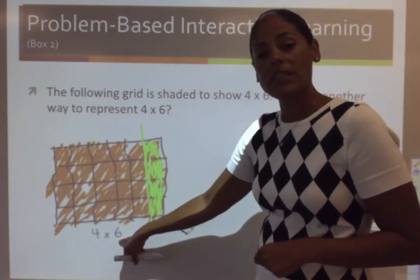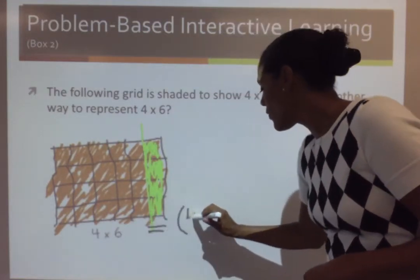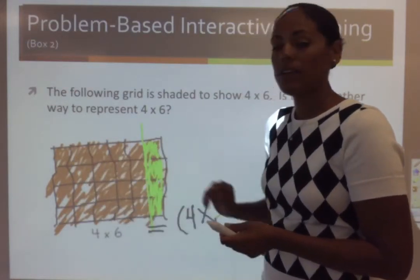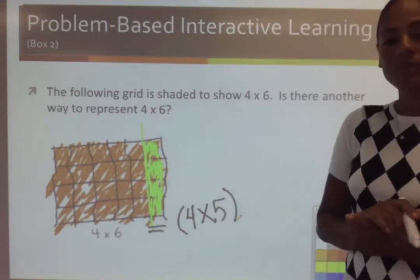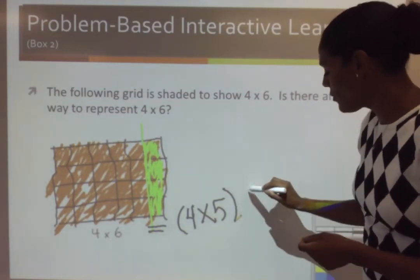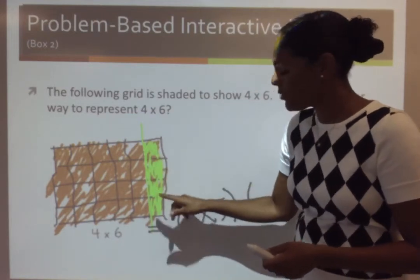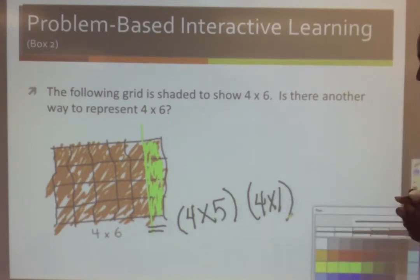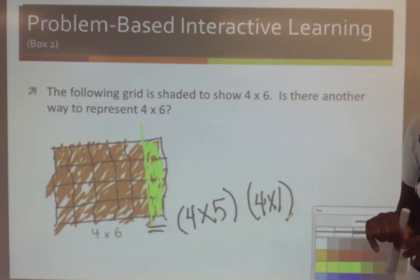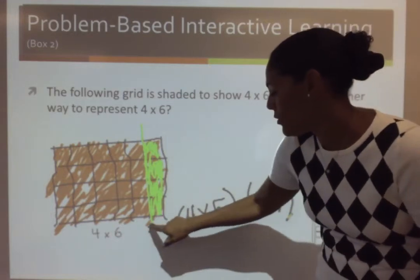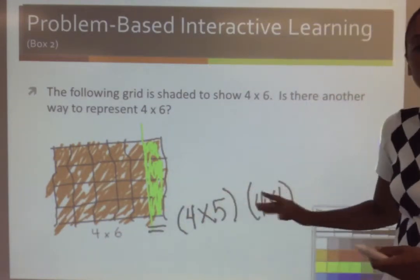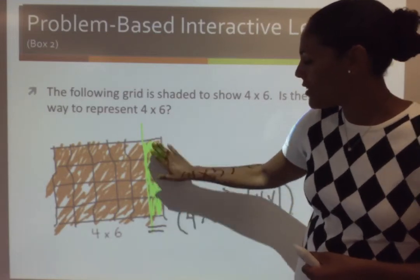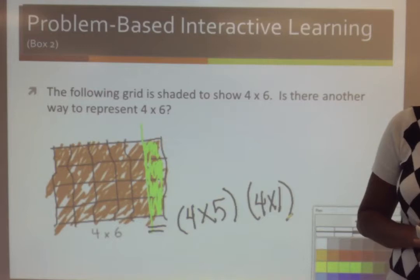I broke apart the 6, not the 4. So I'm going to leave my 4 times on this side, I have 5 columns, so 4 times my 5 columns. And now I need to represent this green column. I still have 4 rows, but instead I have 1 column, so 4 rows times 1 column, so that would be 4 times 1. Now, I put an equal sign between the 4 times 6 and the 2 problems that I wrote. Because both of these are equal, even though I broke it apart, there's still 24 total squares shaded.